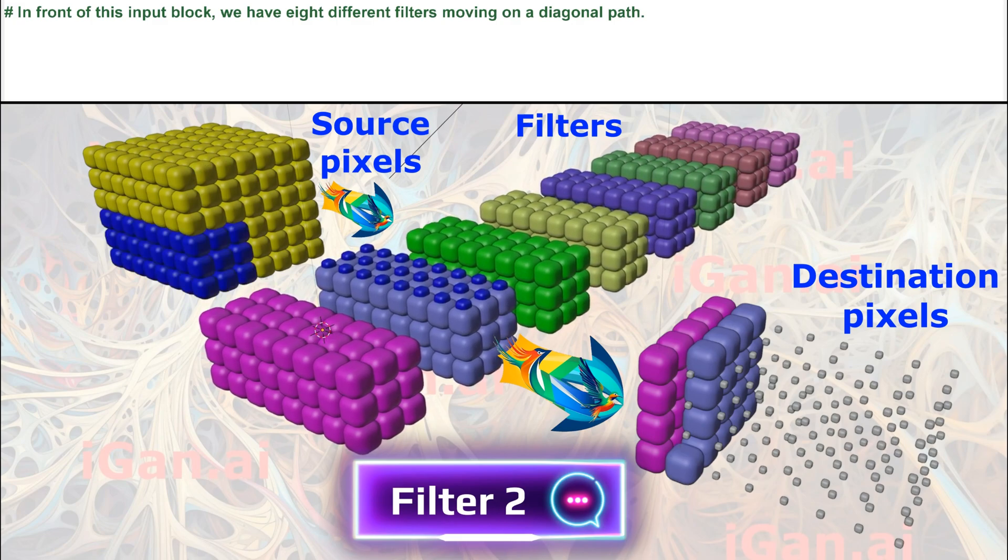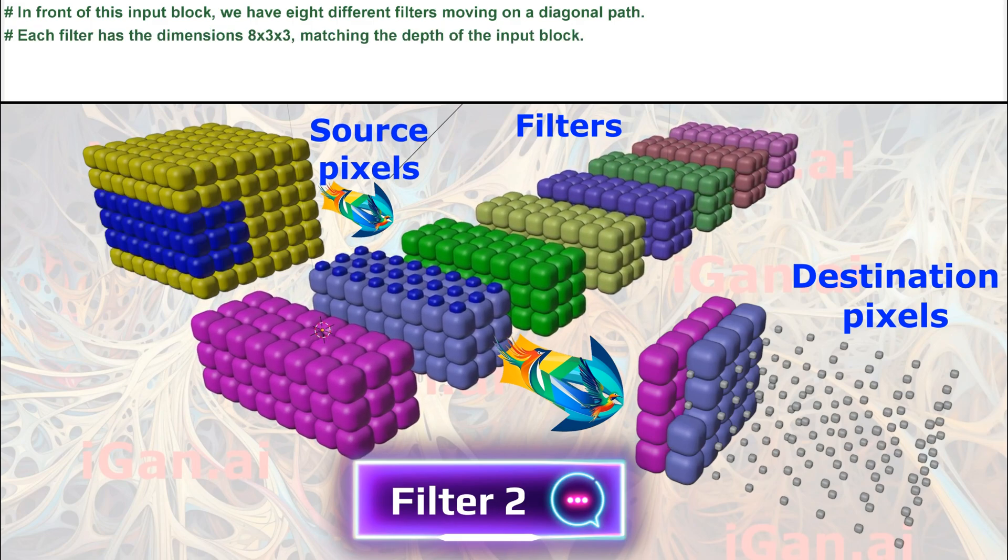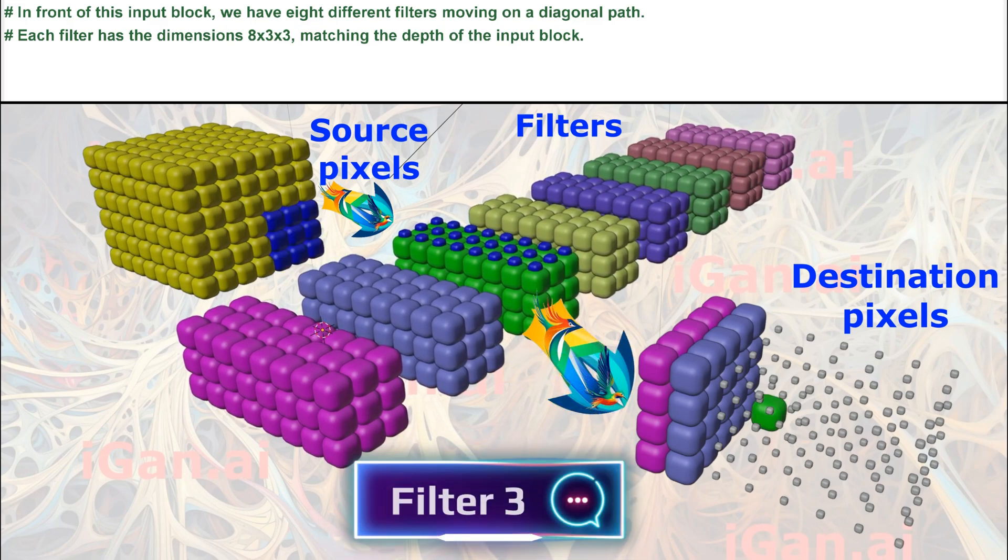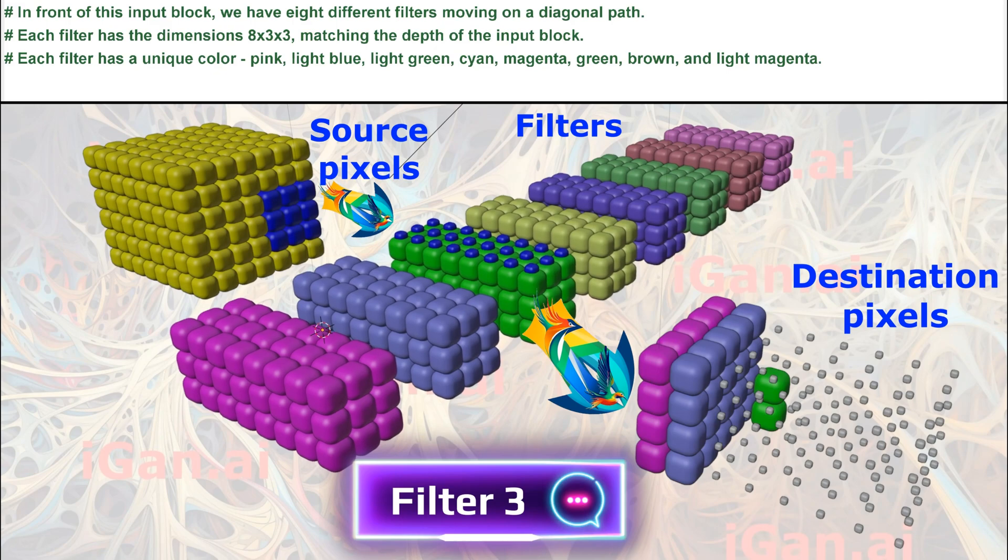In front of this input block, we have 8 different filters moving on a diagonal path. Each filter has the dimensions 8x3x3, matching the depth of the input block.